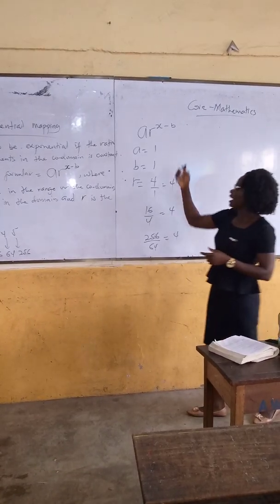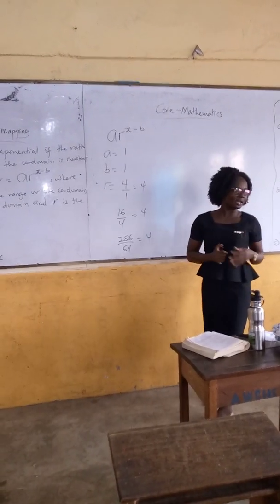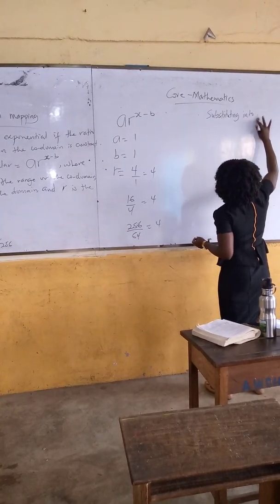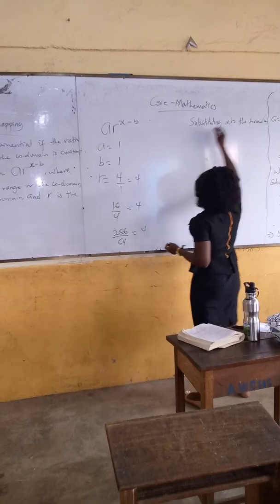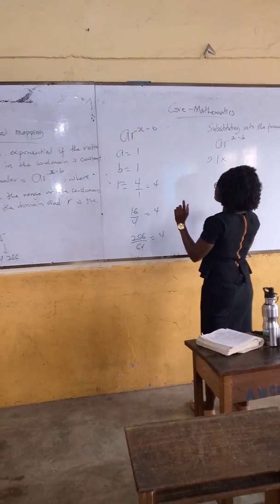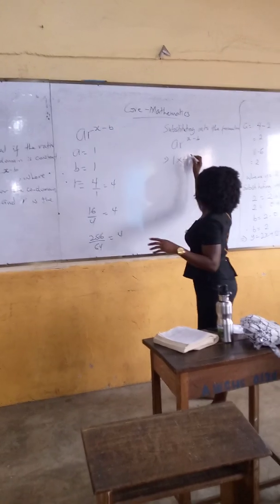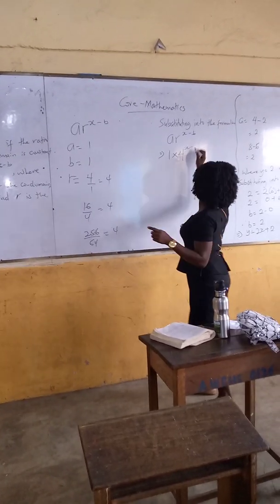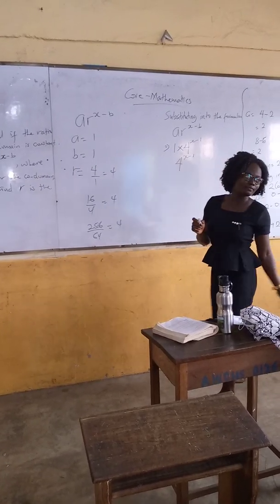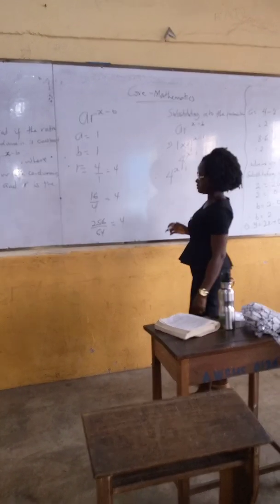Now, by getting these values, we have A, B, and R known. Let's substitute back into the formula. Substituting into ar^(x-b): A is 1, R is 4, and B is 1. So we get 1 × 4^(x-1), which simplifies to 4^(x-1). Therefore, our rule for this mapping is 4^(x-1).